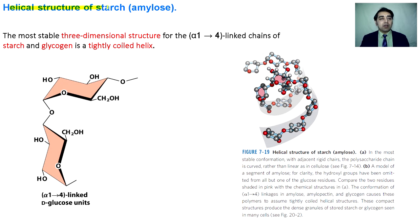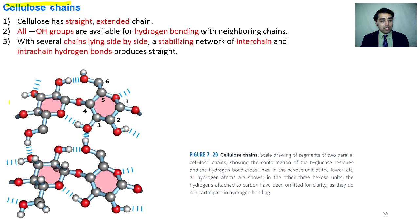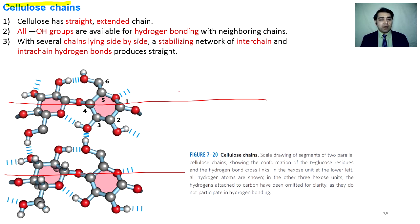In the helical structure of starch, one glucose molecule is bent over the other, giving glycogen and starch a tightly coiled structure. For cellulose, two chains lying side by side are joined tightly with both interchain and intrachain hydrogen bonds, which is why cellulose is very rigid and insoluble in water.